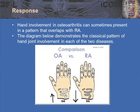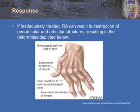Early diagnosis is important so that we can intervene therapeutically. If inadequately treated, rheumatoid arthritis can result in destruction of periarticular and articular structures. This late-stage involvement shows a boutonniere's deformity of the thumb as well as swan neck deformities of the fingers, from bony destruction and erosions into the ligamentous sheaths, resulting in ulnar deviation at the metacarpophalangeal joints. We hope to make the diagnosis earlier to intervene and prevent these kinds of deformities.